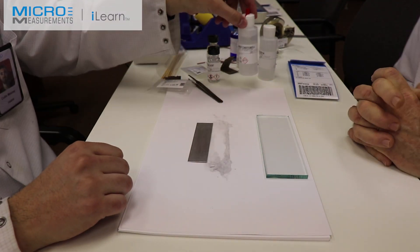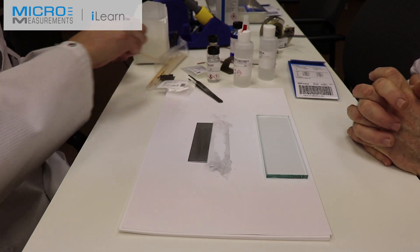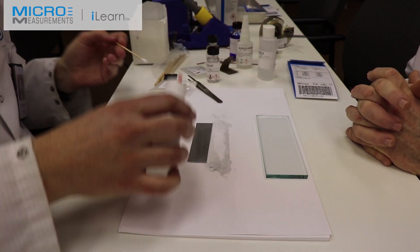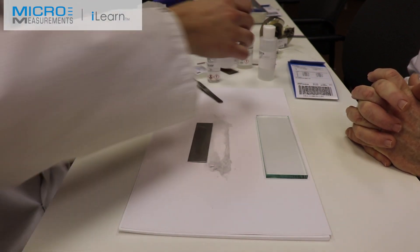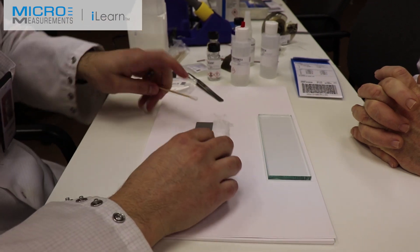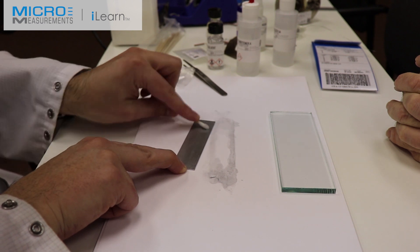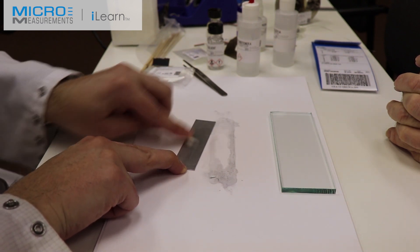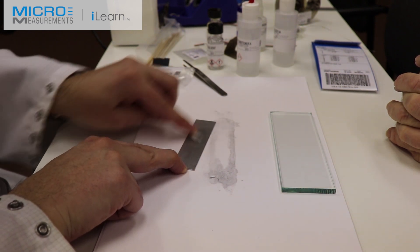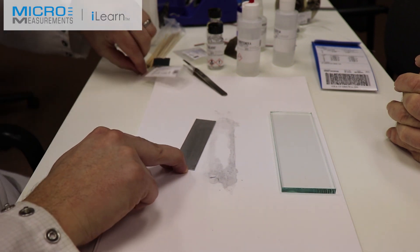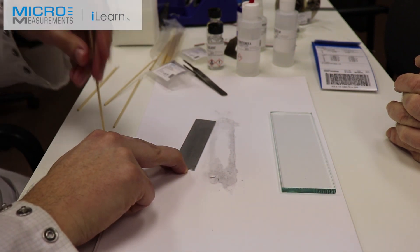The next step is to scrub with the Conditioner A. We're going to take a cotton tip applicator, flood the surface with the Conditioner A, the red tip bottle, and then we're going to scrub. This is going to further remove any contaminants from the surface of our beam and prepare the surface chemically, taking away any materials that need to be etched away.